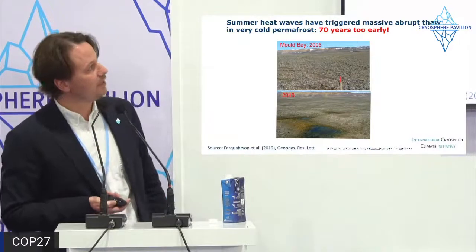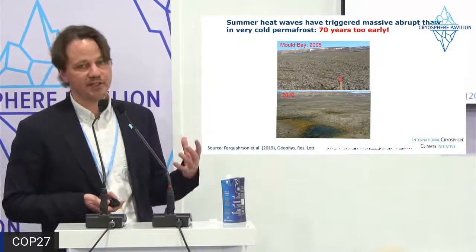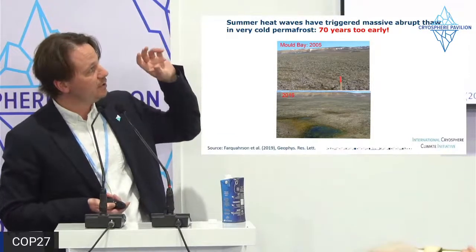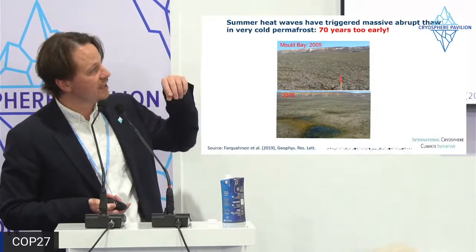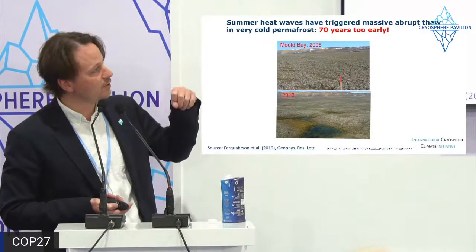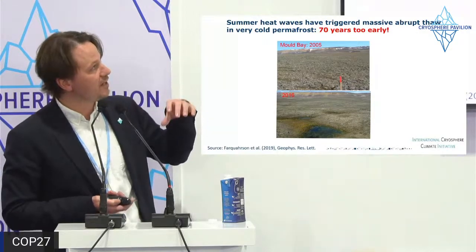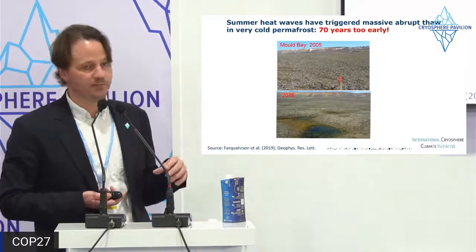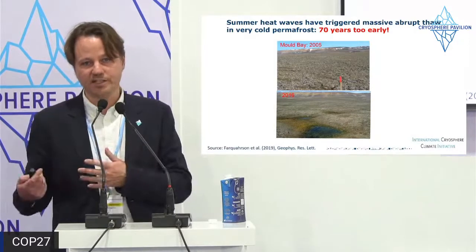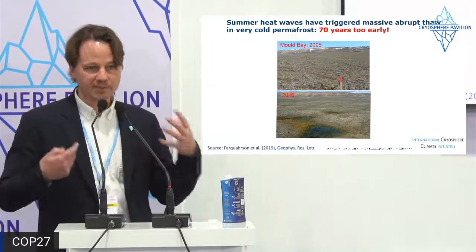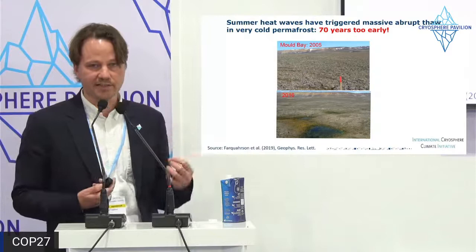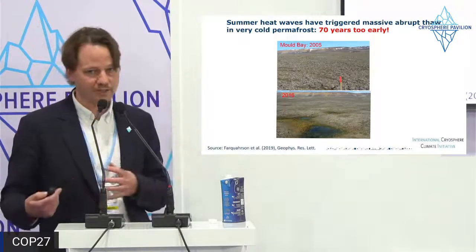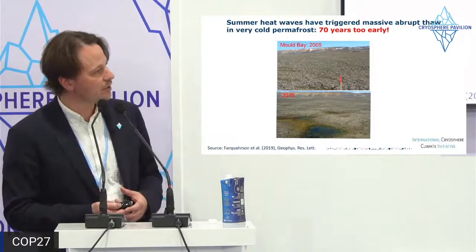Abrupt thaw can also be triggered quite rapidly. A paper from a few years ago shows how a few summer heat waves in the continuous permafrost of the Canadian far north triggered massive abrupt thaw across the landscape in an area not expected to thaw for another 70 years according to model projections. Tipping points at the local scale can be triggered by weather, by fire, or by other local events.